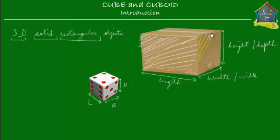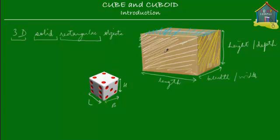Then this over here is another face, which is made of the breadth and the height — another rectangular face. Then this is the third face, the blue one, which is made of the length and the breadth. Behind the white face is another white face — those two faces. Behind this yellow face is another face, so four in all so far. Then under this blue is another face. Total: six faces.